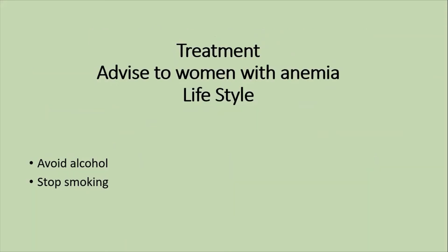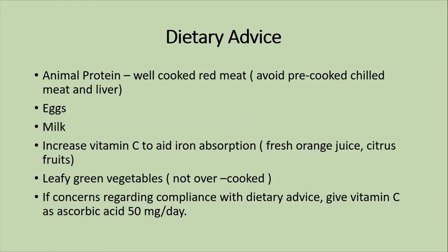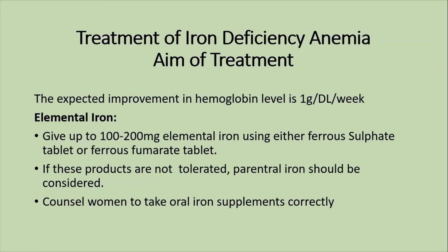For treatment, lifestyle modification includes avoiding alcohol and stopping smoking. For dietary advice, guide patients to eat animal protein, well-cooked red meat, eggs, and milk. Increase vitamin C intake to enhance iron absorption — fresh orange juice and citrus fruits are recommended. If compliance with dietary advice is a concern, give vitamin C as ascorbic acid 50 mg per day. The expected improvement in hemoglobin levels is 1 gram per deciliter per week. Give elemental iron 100 to 200 mg.